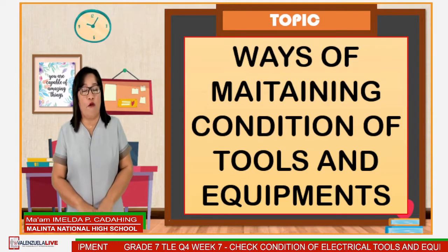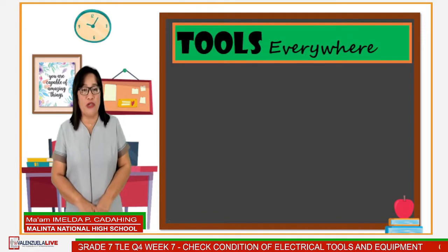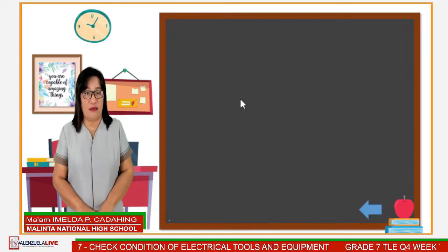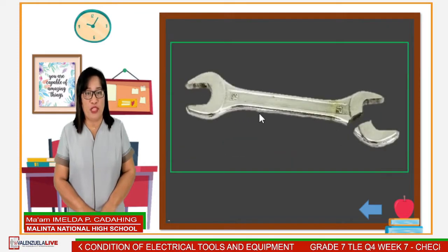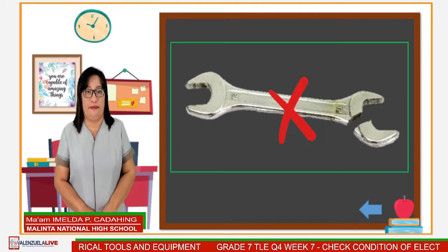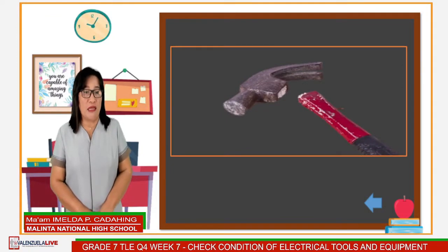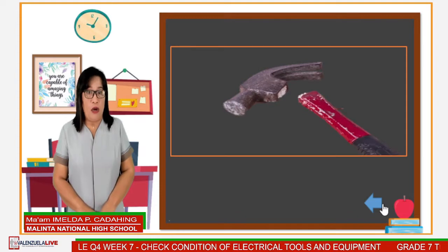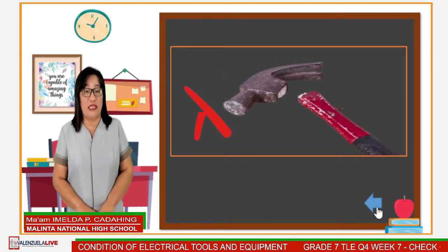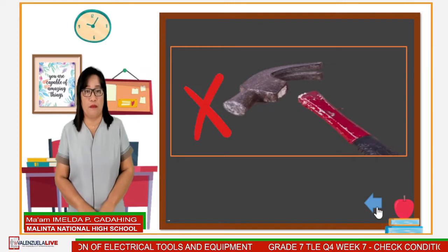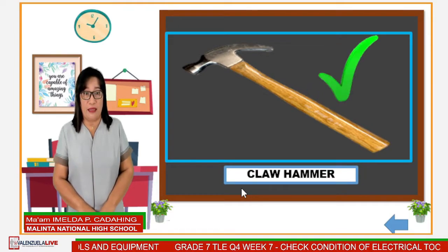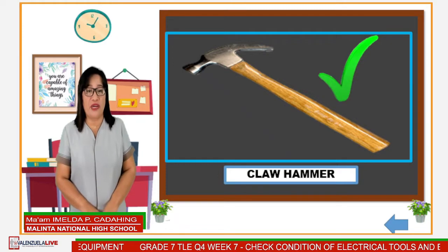Let us have what I call 'tools everywhere.' Here are pictures of some tools. Can you tell which one can function well? The wrench — can this wrench perform its function well? No, because its part is broken. How about this hammer? Based on the picture, can this tool perform its function? This also cannot perform its function well, because the hammer head is detached from its handle. How about this claw hammer? Do you think it can be used well when needed? This claw hammer can function well when needed.